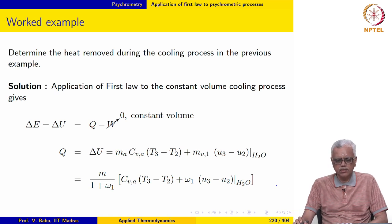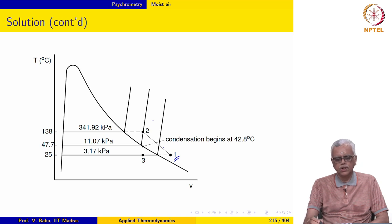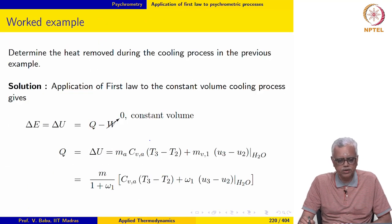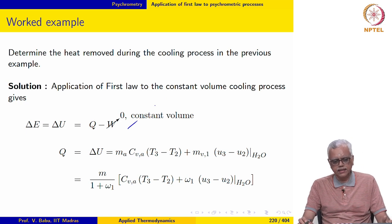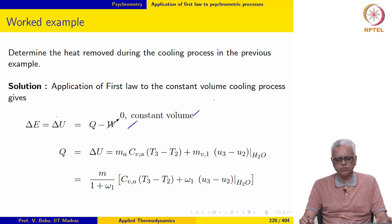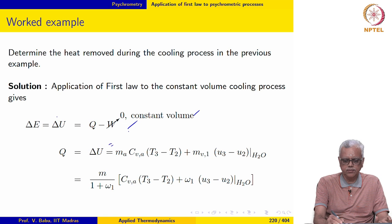We looked at an example where moist air at 25°C and 1 atmosphere was compressed in a polytropic process up to 5 times its initial pressure, then cooled at constant volume. We are now asked to determine the amount of heat removed during the cooling process. Applying the first law: delta E equals delta U equals Q minus W, with no kinetic or potential energy changes.